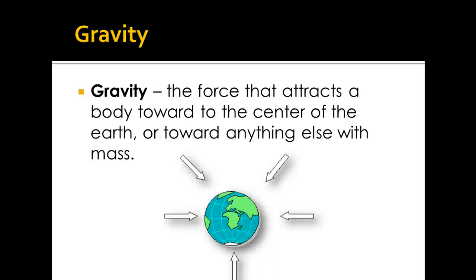Gravity is a force that pulls on an object — including changing its speed and moving it — without being in direct contact with it. All objects have gravity; those with bigger mass have greater gravitational force. Gravity is stronger between objects that are closer together. Weight is a measurement of the force of gravity on an object. Students will learn that gravity is what keeps us all from floating into space and affects objects in motion and at rest.